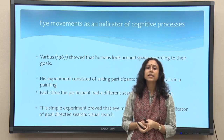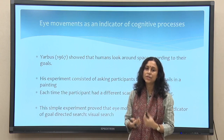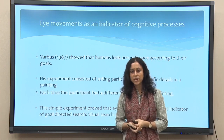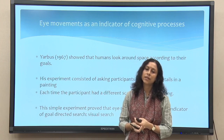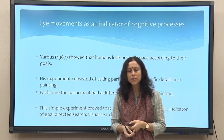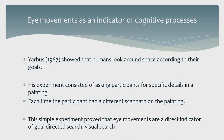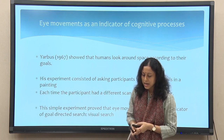Eye movements as an indicator of cognitive processes is something we take for granted today. Eye tracking as a methodology is very well established with a rich domain of research output and very interesting findings. However, this was not considered significant some time back. The initial experimental evidence goes back to Yarbus's 1967 seminal work, which showed that humans look around space according to their goal — something almost commonsensical today. If we want to get more information about something, we look at that particular object, but he showed this through an experiment in 1967.